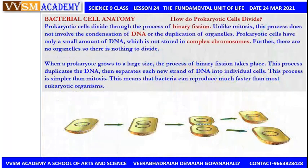How do prokaryotic cells divide? Prokaryotic cells divide through the process of binary fission. Fission means breaking into two — binary means breaking into two — so the cell is divided into two daughter cells. Prokaryotic cells have only a small amount of DNA, which is deoxyribonucleic acid.